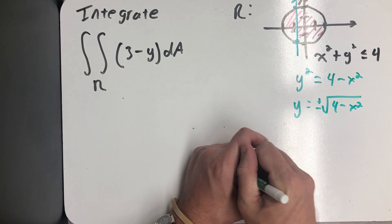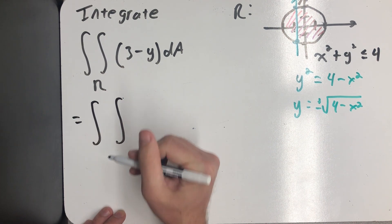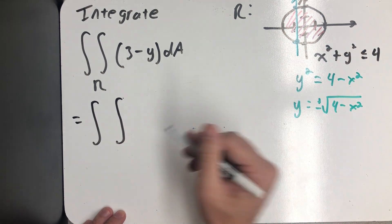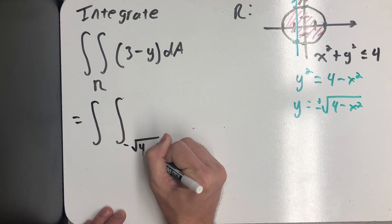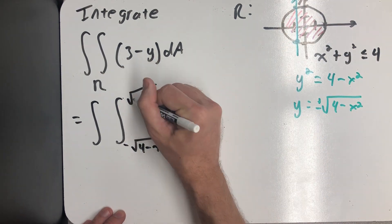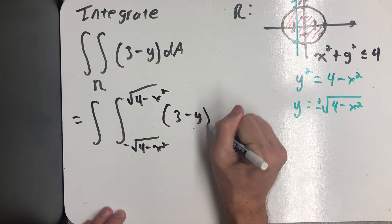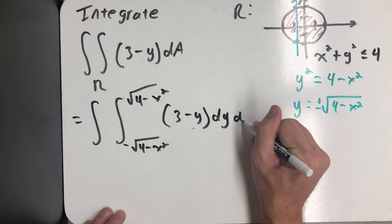So here is my iterated integral. I first hit the minus square root, and then I hit the principal square root function. 3 minus y with respect to y and then x.